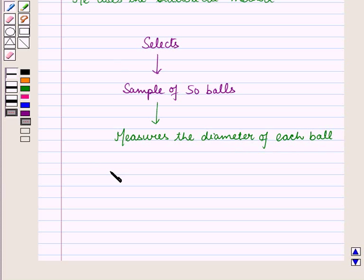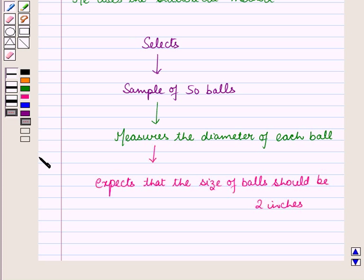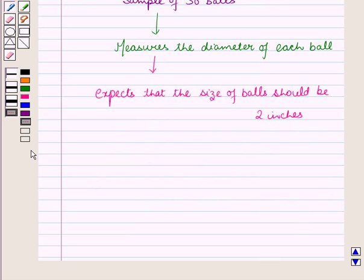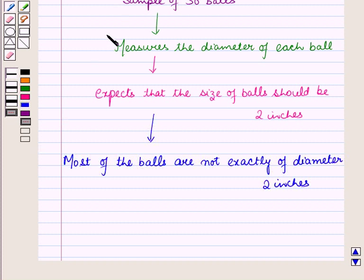Since he has specified that the balls should be of diameter two inches, he expects that the size of balls should be two inches. But he finds that most of the balls are not exactly of diameter two inches. Some of them are having diameter more than two inches and some are having less than two inches.